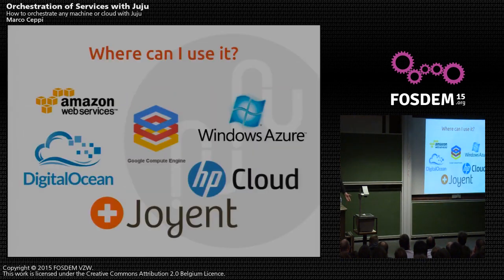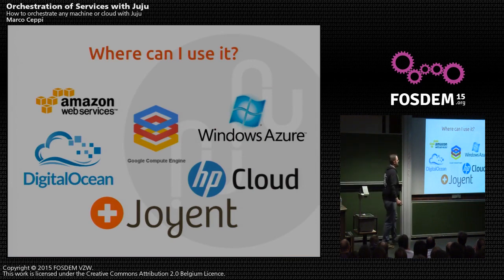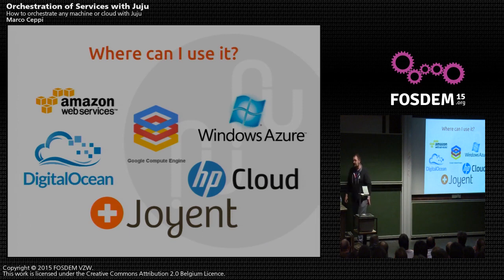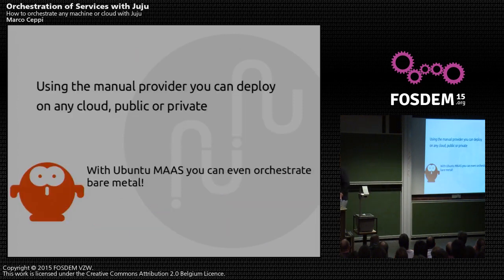You might be asking where you can use Juju. We're in every major public cloud: Amazon Web Services, Joyent, HP, Windows Azure, Google Compute Engine, and DigitalOcean. Using the manual provider, you can use any cloud, whether public or private — you lose a little bit of the magic, which is enlistment. Or if you're using Ubuntu MAAS, you can even orchestrate with bare metal. So if you've got spare servers laying around, you can just slap those together and start deploying today.